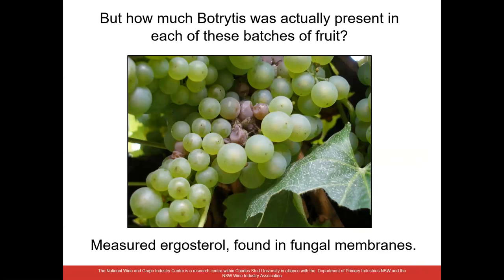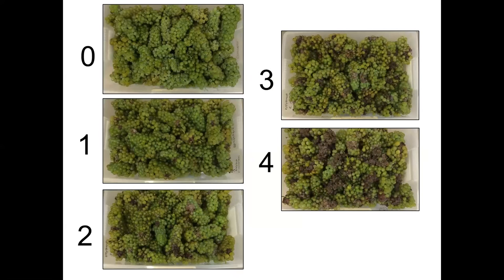We wanted to more accurately measure the amount of fungal biomass present in these bunches, so we turned to measuring ergosterol. Ergosterol is a sterol found only in fungal membranes — not in plants or animal cells — so we used it as a measure of fungal biomass. I should note that ergosterol is not unique to Botrytis; it's present in all fungi, including wild yeast on the grape berry surface. So even in completely clean, disease-free bunches we'll still get a background level of ergosterol.